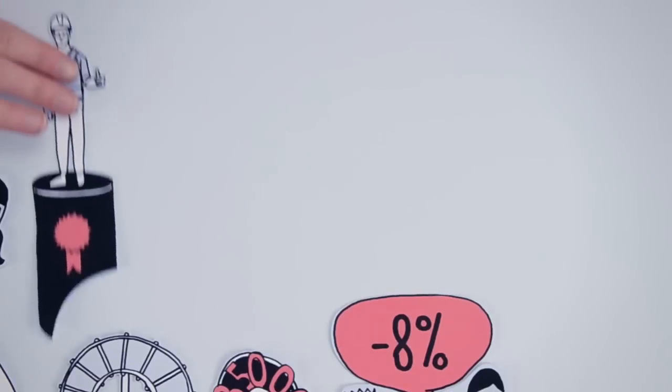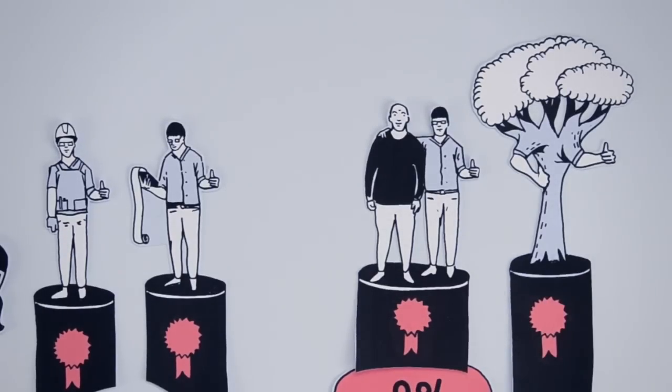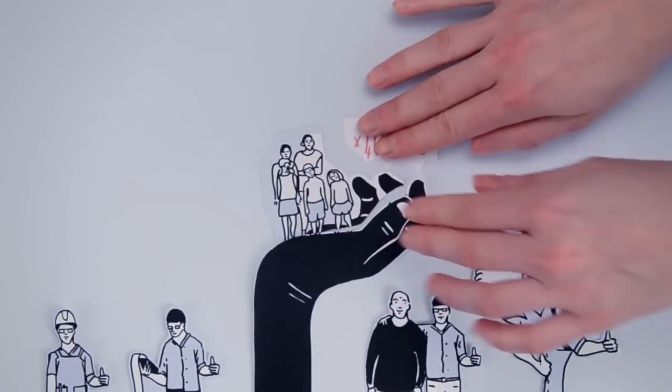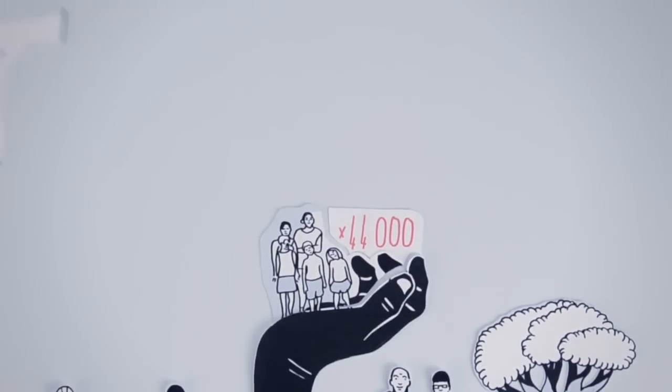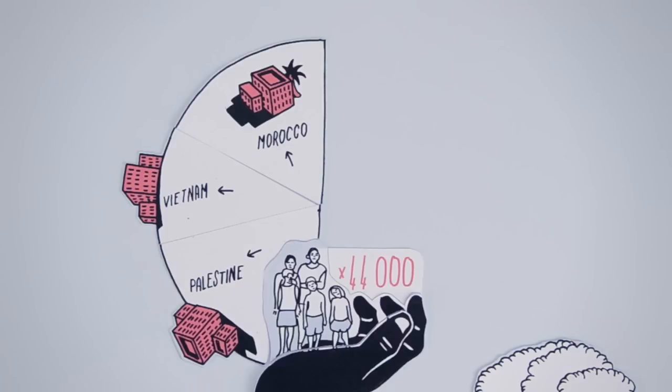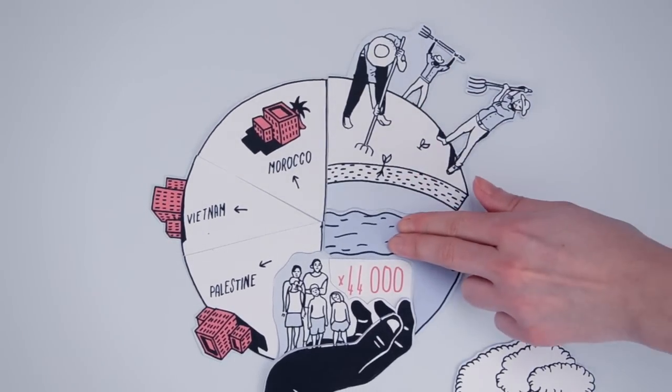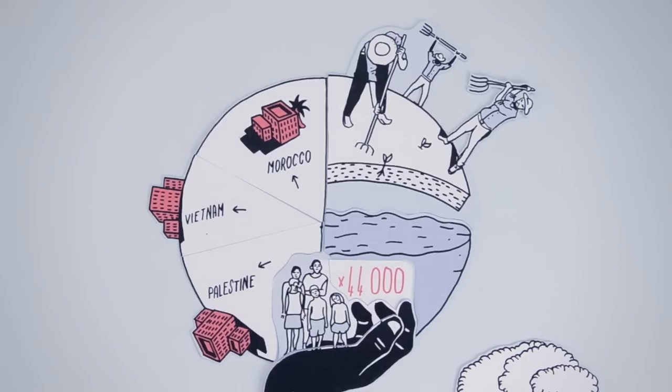Eau de Paris has since proven to be an efficient, transparent, socially, and environmentally responsible public water provider. It has given water solidarity allocations to some 44,000 low-income households in Paris, and has established solidarity public-public partnerships with various cities in the south. It has helped 118 farmers around water catchment areas eliminate the use of toxic chemicals that pollute the water supply.